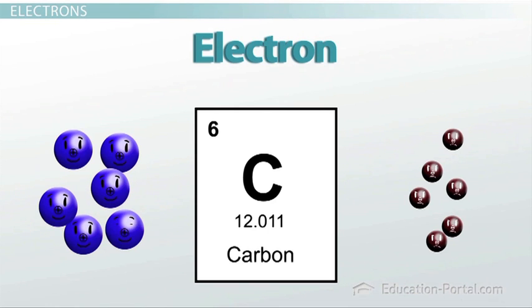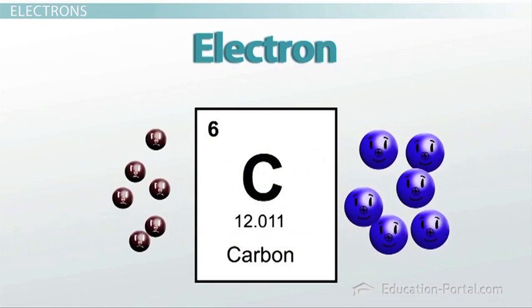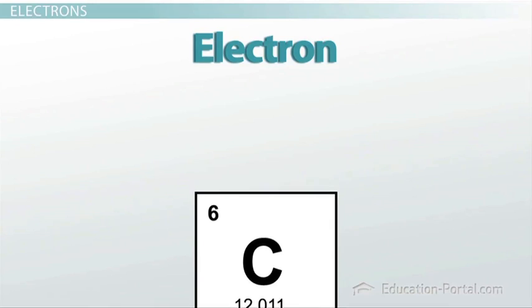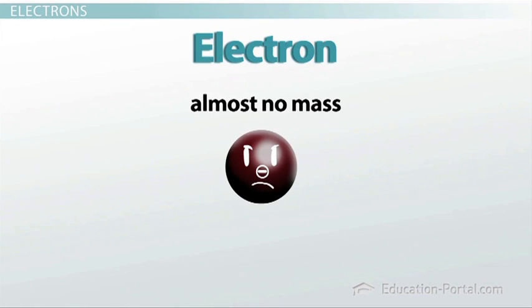Another feature of the electron that makes it so much different from the proton and neutron is that electrons have almost no mass. In fact, the mass of an electron is so much smaller than the mass of both protons and neutrons that in this course, we are going to ignore the mass of electrons.